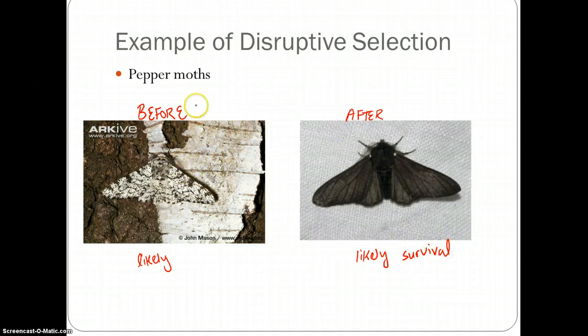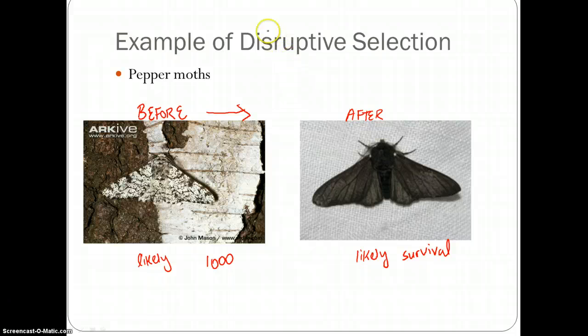Now what happened before and after? In each situation, the extremes were selected for. Meaning when there was no pollution, the white pepper moth was selected for. When there was too much pollution, the black pepper moth was selected for. So disruptive selection is disruptive because the extremes are selected for in each time period.